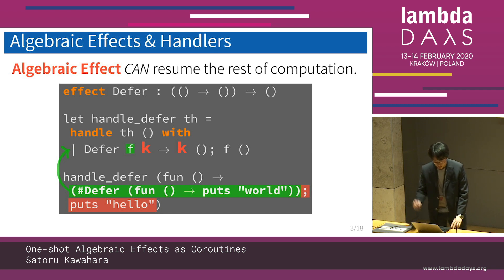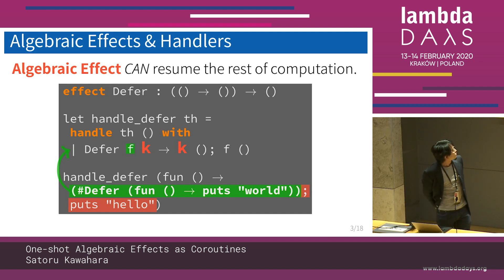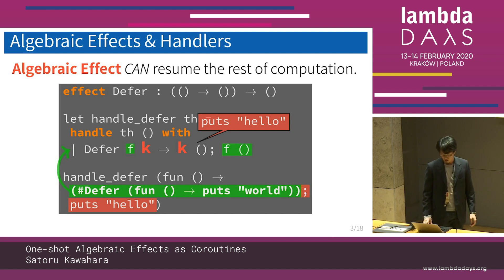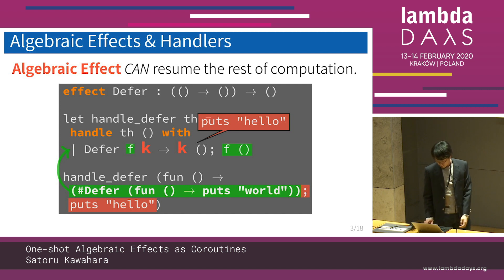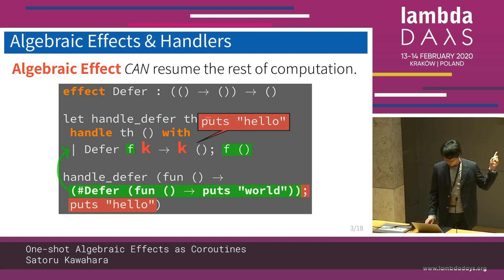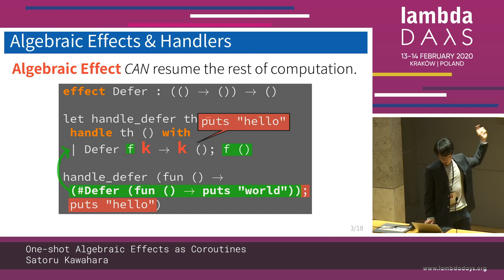The handler binds f to the function and k as a continuation. The handler evaluates k and f and prints in this order. Thus, the algebraic effect can resume the rest of computation.